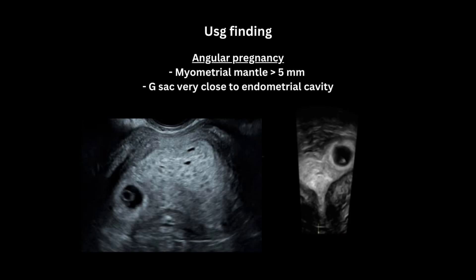On the contrary, in angular pregnancy the myometrial mantle is more than 5 mm and the gestational sac is very close to the endometrial cavity.